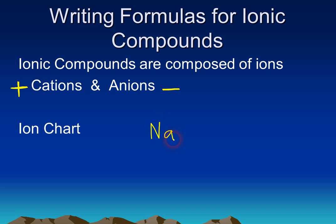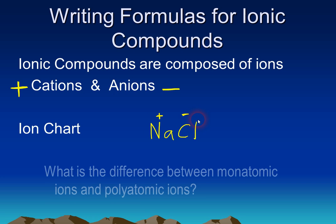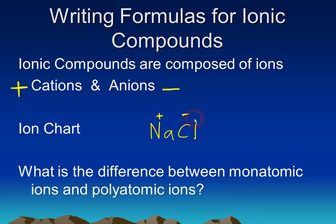For example, we have NaCl. Na is the metal — that's the cation with a positive charge — and the chloride, Cl⁻, that's got a negative charge and it's always written second. So the cation is always written first and the anion is written second.